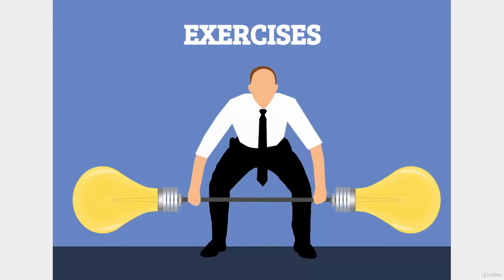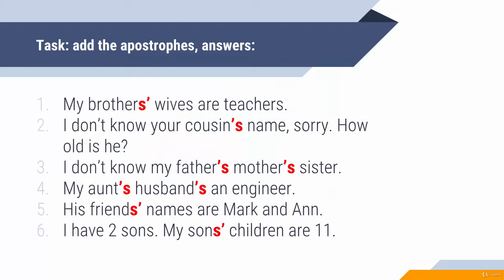Apostrophes. Let's see if you understood everything. The first exercise: add the apostrophes where necessary. 'My brothers' wives are teachers.' The apostrophe is after S. Why? 'Brothers' wives' — how can you understand? Well, from the plural form of 'wives,' of course, because usually you have one wife at least by law. So 'my brothers' wives are teachers.'